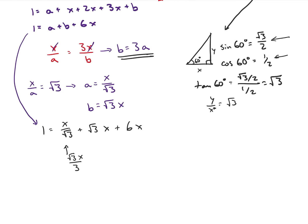So I can combine or rearrange this just a little bit. So 1 is equal to 4 root 3 over 3 x. So I just combined this term and this term plus 6 x, which is equal to x times 4 root 3 over 3 plus 6.